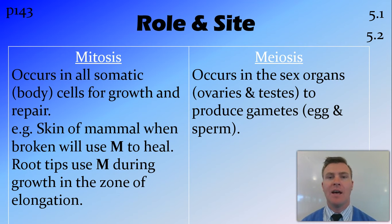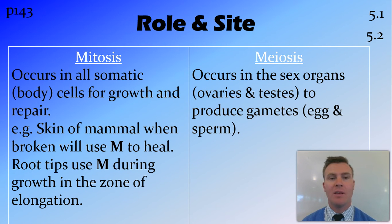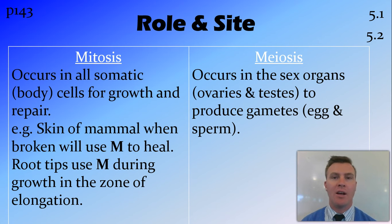Meiosis, on the other hand, only occurs in one place, and that's in the sex organs — so in humans, the ovaries and testes — and produces gametes, which are the egg and sperm in humans. That's a much more specific one. To remember this: mitosis sounds like 'my toes,' so it occurs in my toes and all over my body. And meiosis sounds like 'my ovaries,' so it only occurs in the sex organs.